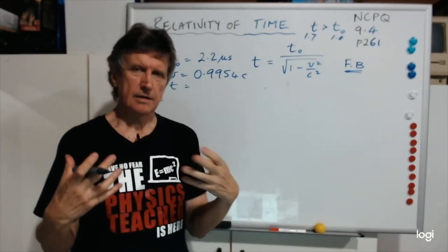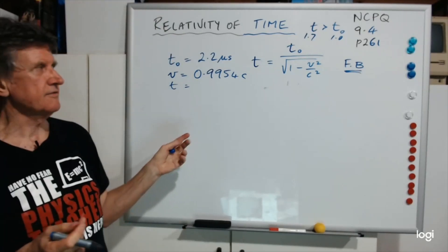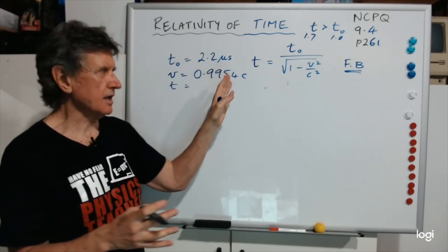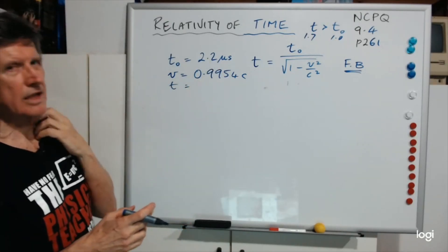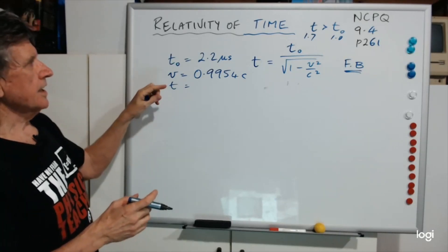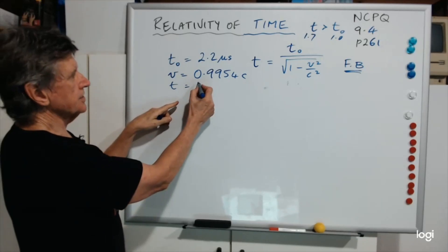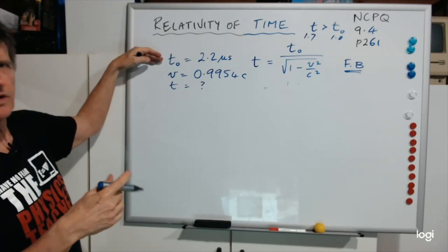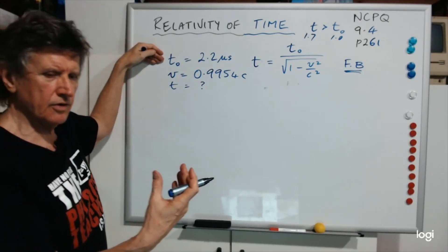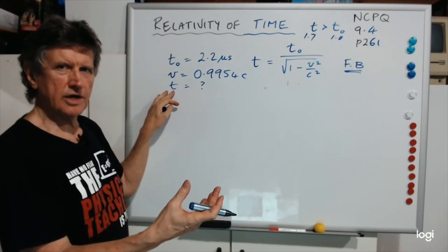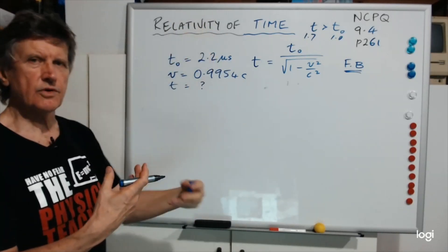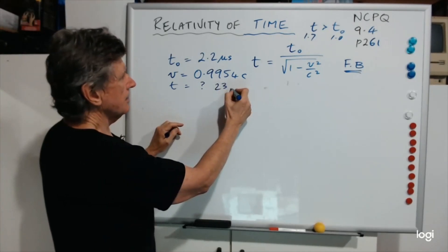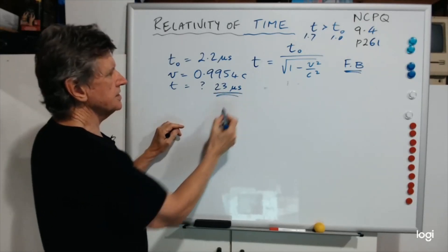I looked at the original paper written by the two scientists back in 1964 — it's available on the internet and I got all their data for the textbook, so it's accurate data. The question is: what would be the time as measured by the scientists who were seeing the muon moving? The rest lifetime is 2.2 microseconds as measured by someone travelling with the muon — what would be the time measured by scientists who weren't at rest relative to the muon?